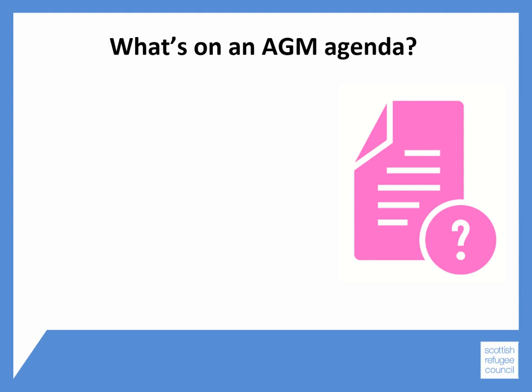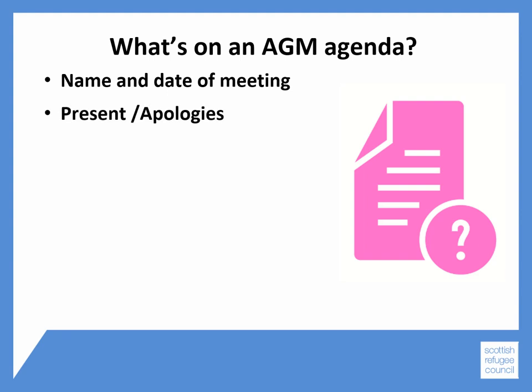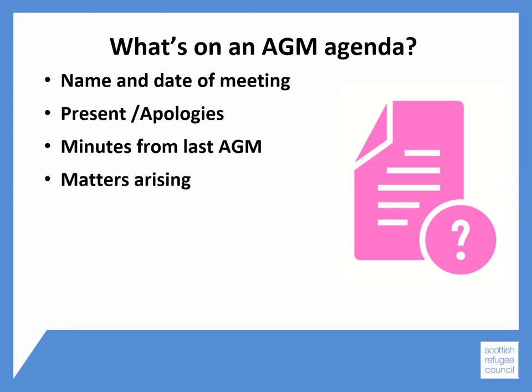So let's think about what's on an AGM agenda. Similar to your committee meetings, you should have the name and date of the meeting at the top, followed by welcome and introductions including present and apologies, then minutes from your last AGM and any matters arising, followed by your annual report. This is usually given by your chair, but there may be other people in the organisation who can present it.